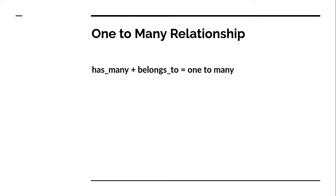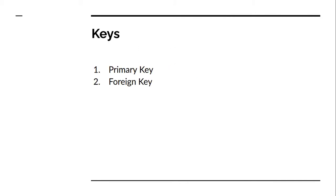How do we implement a one-to-many relationship? has_many plus belongs_to together form a one-to-many relationship. In our post and comment example, both form a one-to-many relationship. To implement this, we need to store the primary key of the model defining has_many into the model defining belongs_to, which is also known as a foreign key.